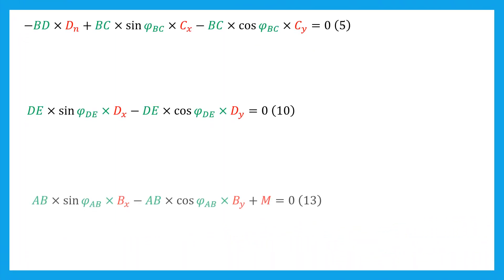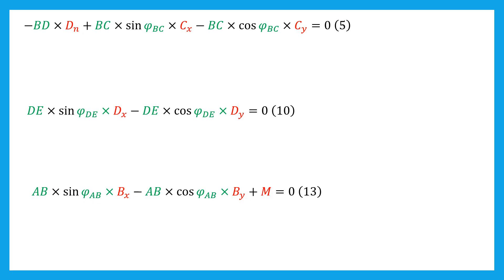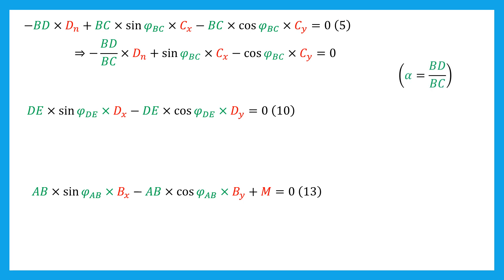Here are the moment equilibrium equations. Starting with equation 5, it is possible to divide by the distance BC. The equation then writes: minus (BD/BC)·DN plus sin(phi_BC)·CX minus cos(phi_BC)·CY equals zero. We can denote alpha as the ratio BD/BC; thus the moment equation 5' can be written as: minus alpha·DN plus sin(phi_BC)·CX minus cos(phi_BC)·CY equals zero.